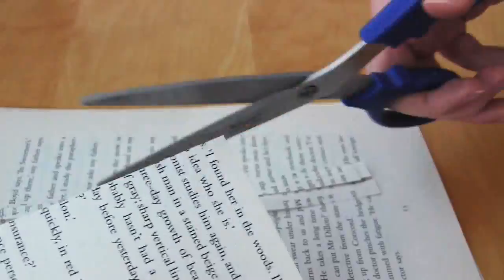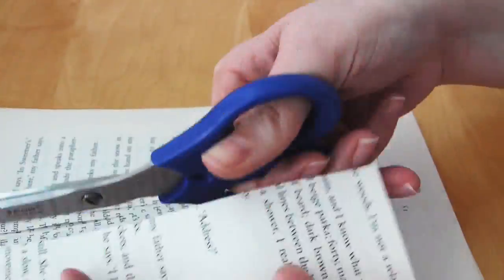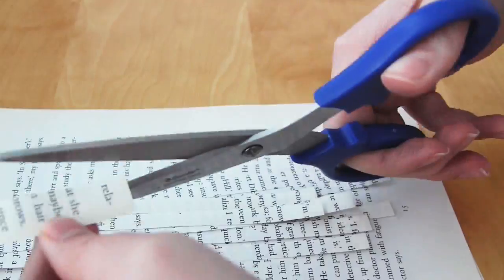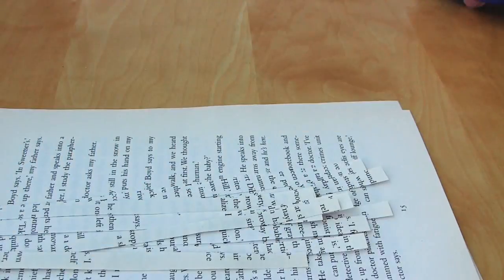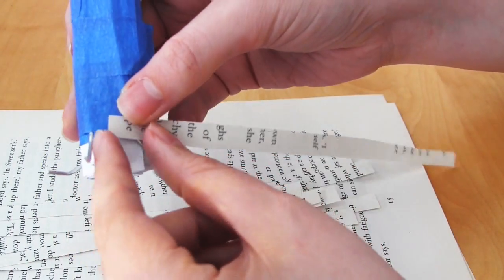So to paper mache, what you do is you take a thin paper strip, you dip it into the paper mache solution. You run the strip between your fingers to get rid of any excess mixture, and then you simply wrap that strip around the tree.